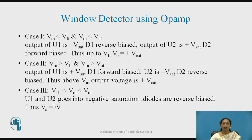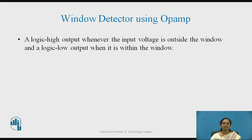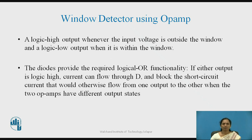When input voltage is within the window — that is between VUT and VLT, meaning input is greater than VLT but less than VUT — both OPAMPs give negative saturation. Therefore both diodes are reverse biased and output voltage will be 0 volt. We conclude that there is a logic high output whenever the input voltage is outside the window, and a logic low output when it is within the range of VUT and VLT. The diodes provide the required logical OR functionality — when either output is high, current flows through the diode, blocking short circuit current that would otherwise flow between the two OPAMPs when they have different states.